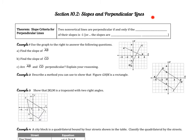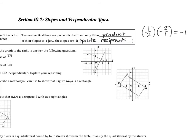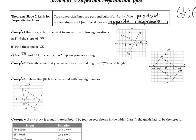Now we're going to talk about slopes and perpendicular lines. The slope criteria for perpendicular lines: two non-vertical lines are perpendicular if and only if the product of their slopes is negative 1. This is another way of stating that the slopes are opposite reciprocals. For example, if one slope is positive 1 half and another is negative 2 over 1, multiplying them gives negative 1 — confirming they are opposite reciprocals and the lines are perpendicular, forming 90-degree angles where they intersect.